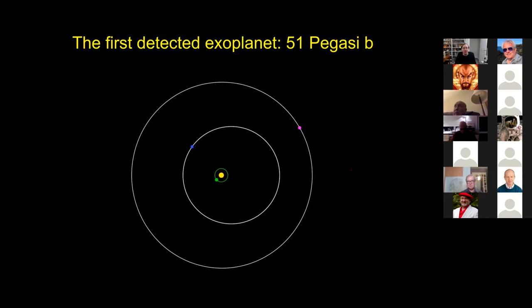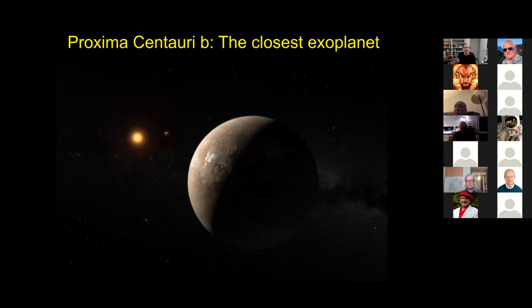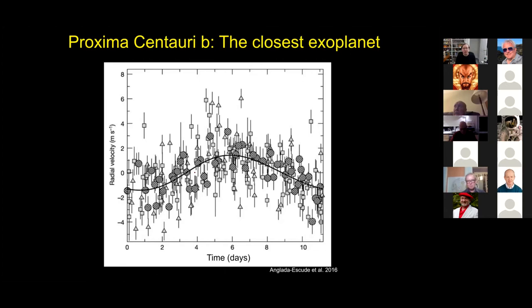Over time our technology improved and we were able to measure smaller and smaller signals. One example of a smaller signal is Proxima Centauri b, seen here in an artist's impression, which orbits one of those red M stars. You can see that the star wobbles at roughly a meter per second over a period of about 10 days. Basically, we've been able to get better and better measurements to detect smaller and smaller planets.